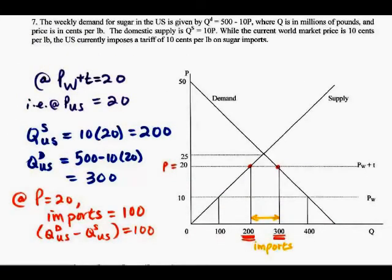When the tariff of 10 cents is imposed, the U.S. price goes to 20. And the distance between the quantity demanded in the U.S. and the quantity supplied, 500 minus 20p at a price of 20. 20 times 20 is 400, so the import should be 100.